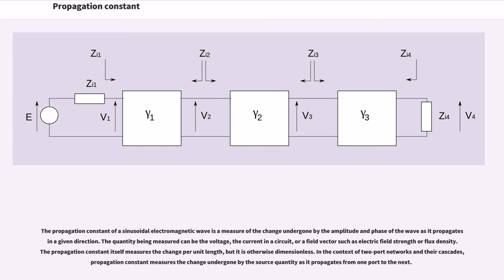Propagation constant: The propagation constant of a sinusoidal electromagnetic wave is a measure of the change undergone by the amplitude and phase of the wave as it propagates in a given direction. The quantity being measured can be the voltage, the current in a circuit, or a field vector such as electric field strength or flux density. The propagation constant itself measures the change per unit length, but it is otherwise dimensionless. In the context of two-port networks and their cascades, propagation constant measures the change undergone by the source quantity as it propagates from one port to the next.